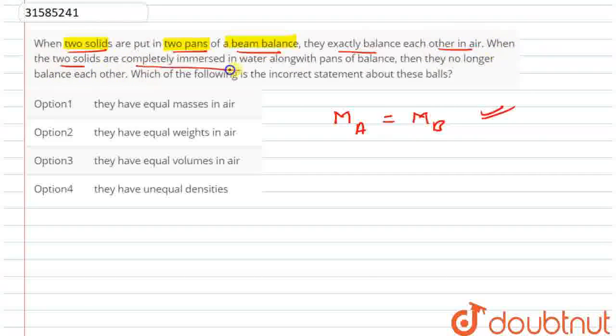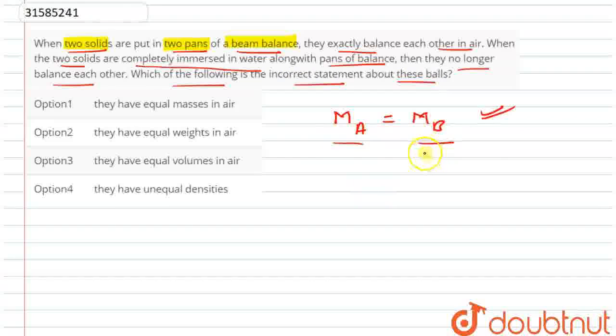When two solids are completely immersed in water, alongside with the pans of balance, they are no longer balanced. Which of the following is incorrect about these balls? So look, when these two were completely balanced, then when I put them in water, they are not balanced.